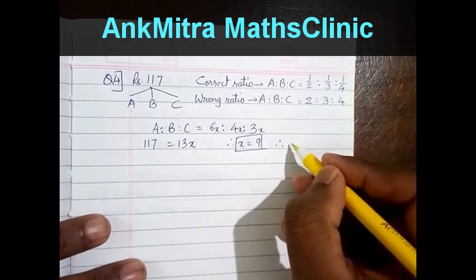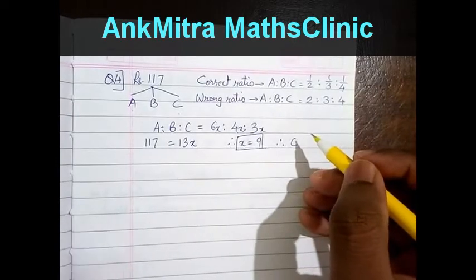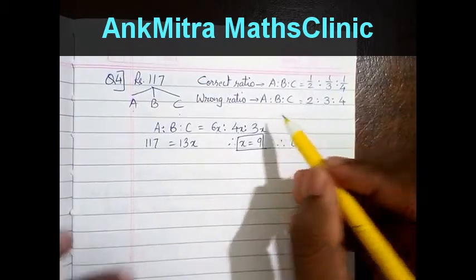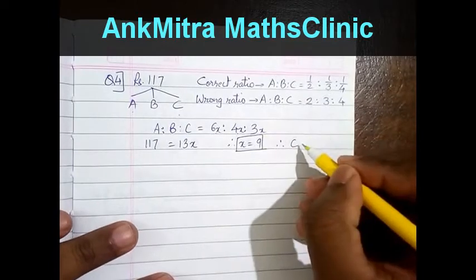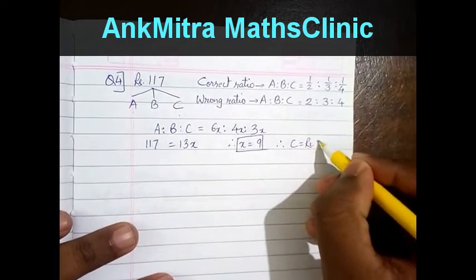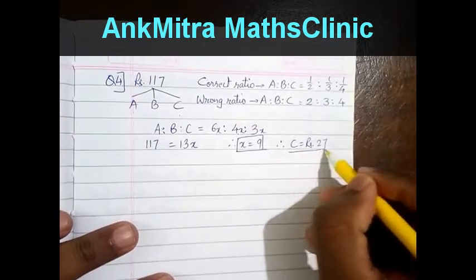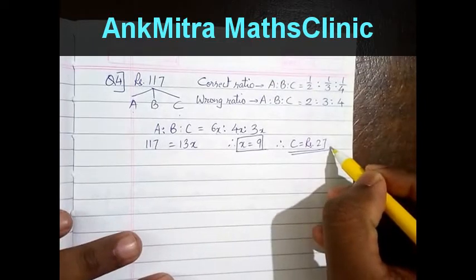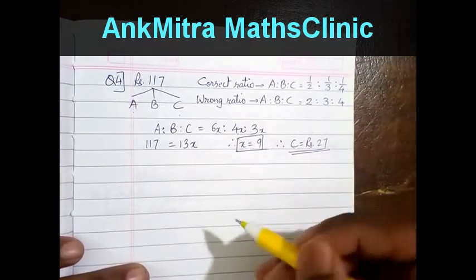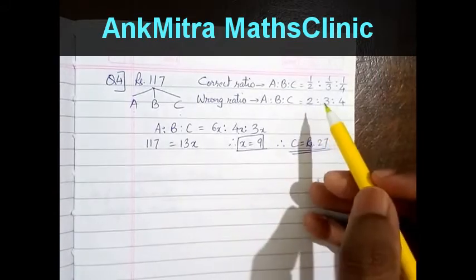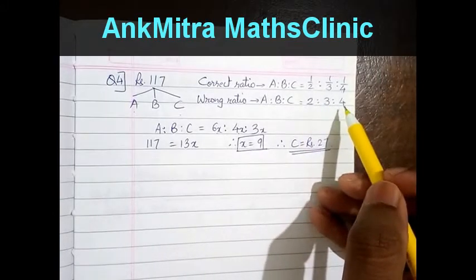Therefore C was expected to receive 3x, that is 3 × 9, which is rupees 27. So C's original expected value was rupees 27. Now we will find by how much he gained by calculating the incorrect value that he got.